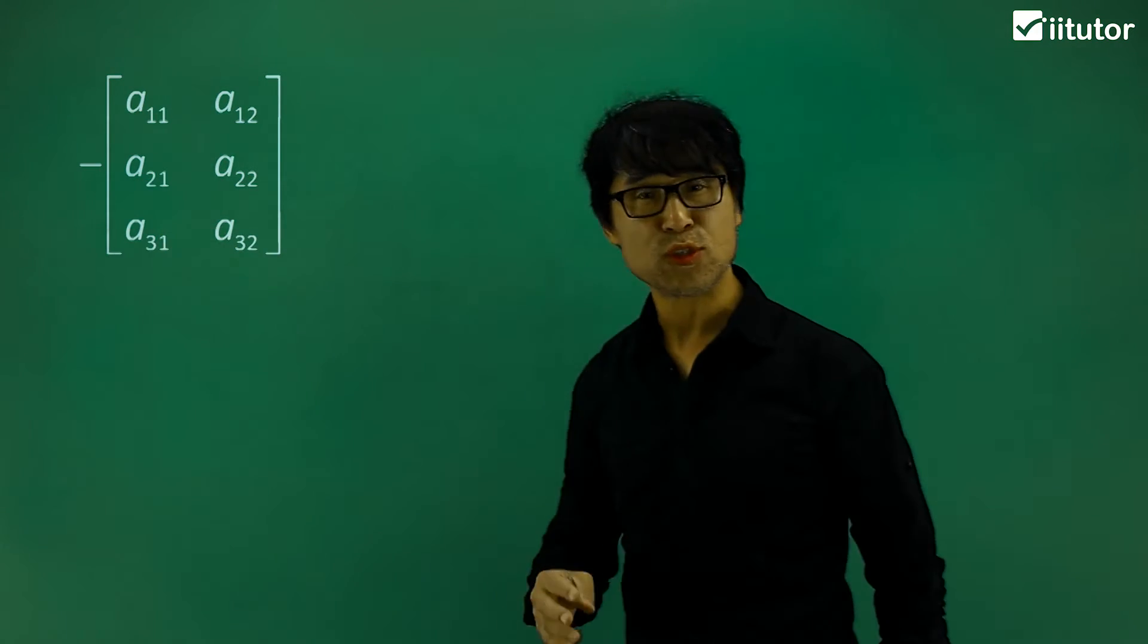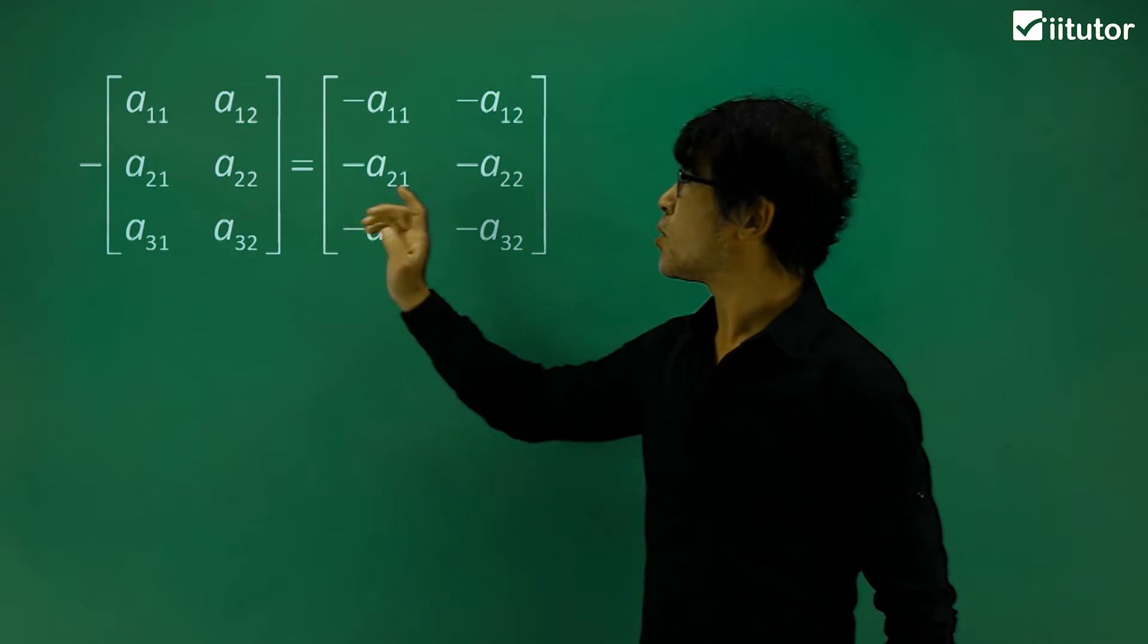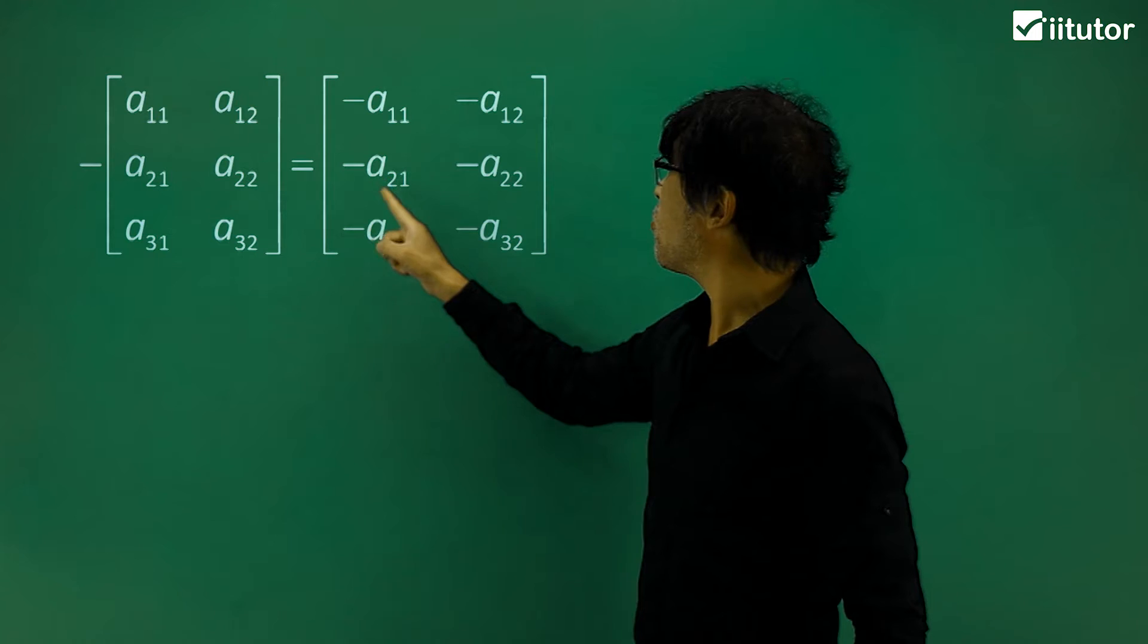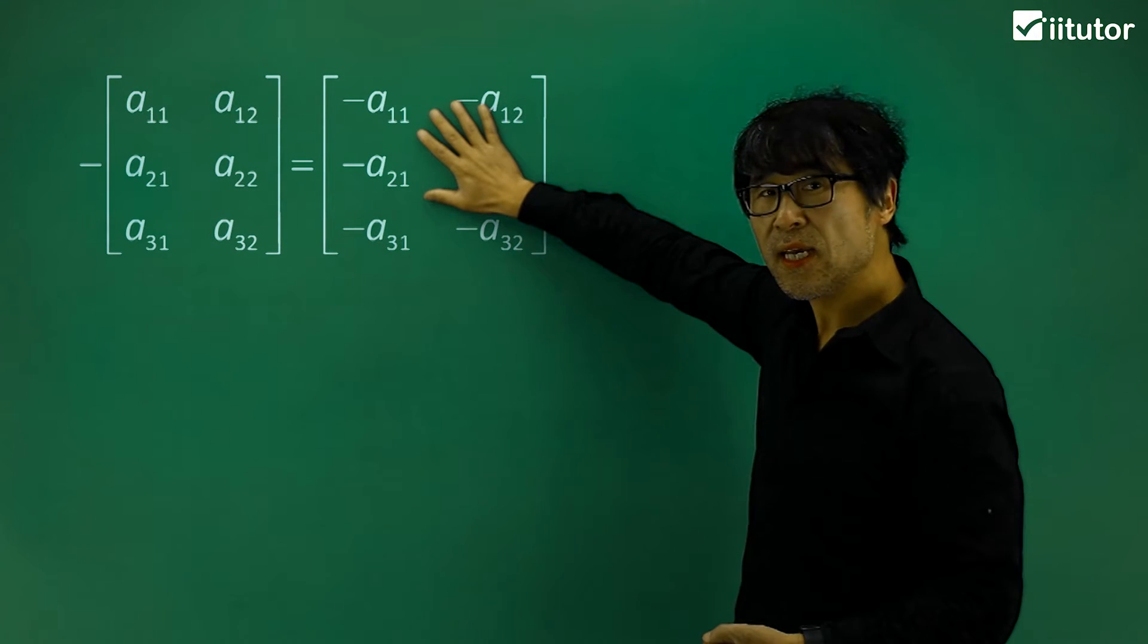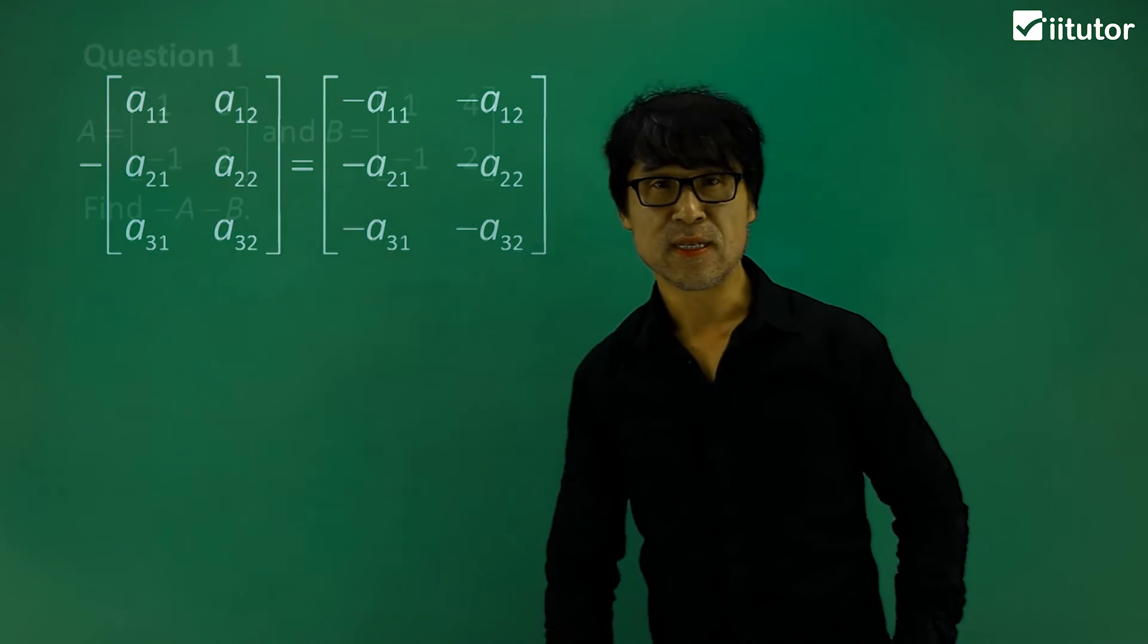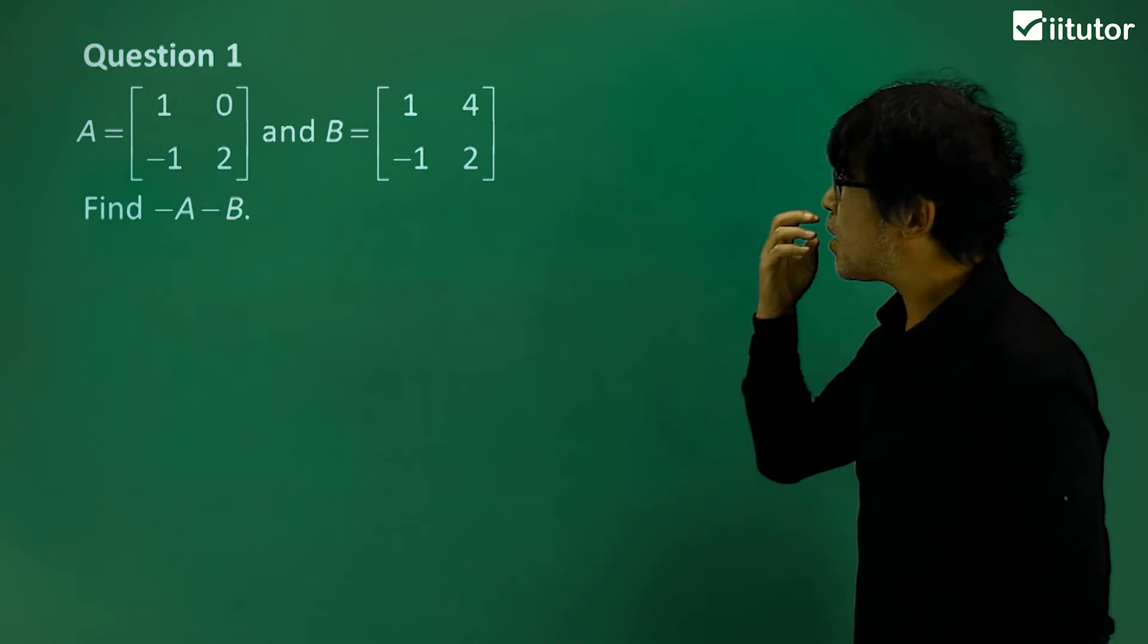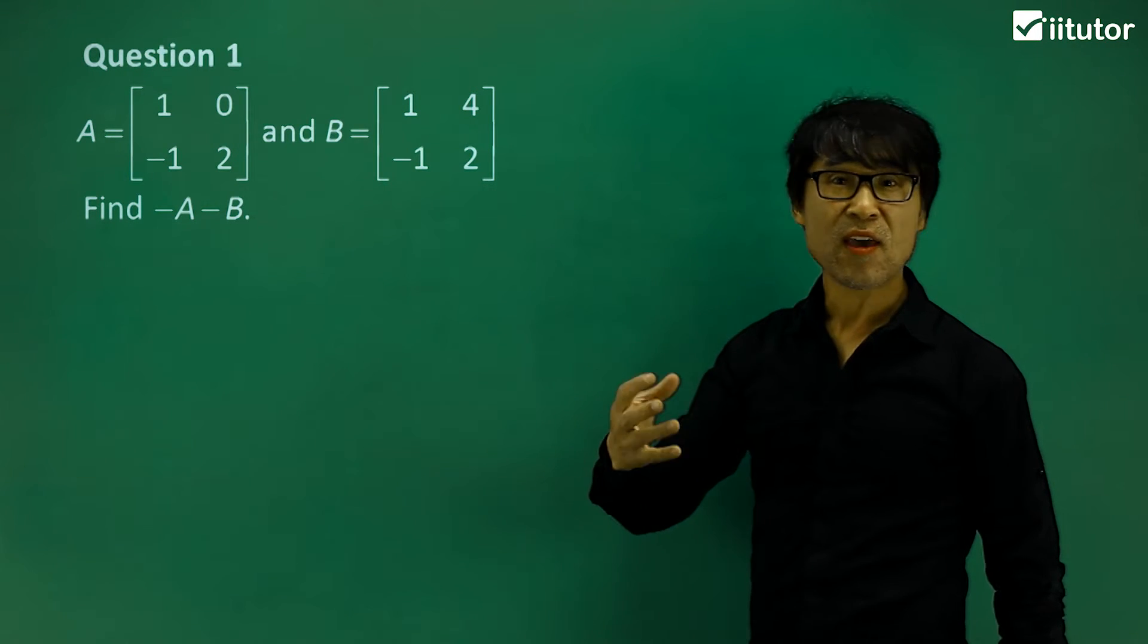So if you have negative matrix of this matrix, it's just multiplied by, times negative everywhere. This is a negative matrix of this matrix. Easy? We'll take some examples over here, see how you can have a better understanding.